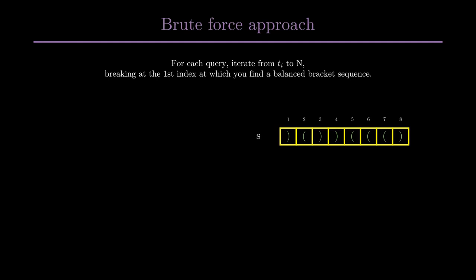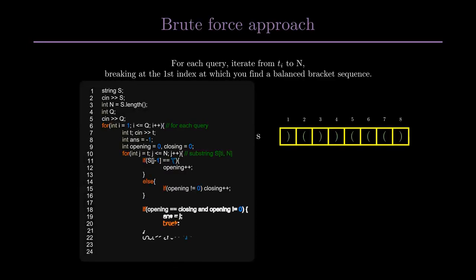Here is the code for the brute force approach. We use two variables, opening and closing, to keep track of the brackets. Then in each query we iterate j from t to n. If the current character is an opening bracket, we increment the variable opening. Else we increment closing, provided the opening bracket is not zero, because then that closing bracket will be a part of an invalid bracket sequence. If we are able to find a j such that opening is equal to closing and provided it is not zero, then that index is our answer. Else it is -1.